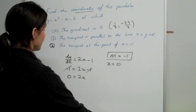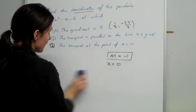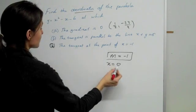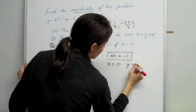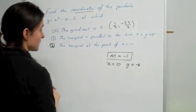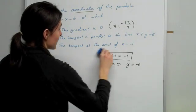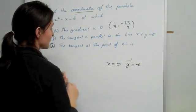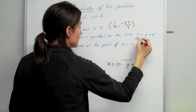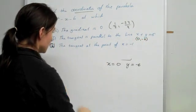After we've done that, we can substitute the 0 value into that equation and get y = -6. So basically, the answer for this particular question is going to be (0, -6).